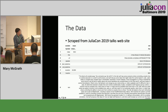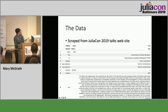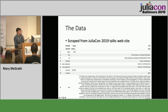So after scraping this data, what do we find? We have titles, URLs, speakers, dates, times, durations, locations, and a bunch of text. So this is our starting point. This was all done in Julia — I like to use Julia for my data scraping and data wrangling. It's the language that I prefer, and that makes it very easy.